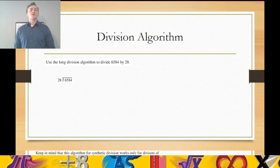It says use the division algorithm to divide 6,584 by 28. In other words, how many times can 28 go into this number 6,584? In other words, how many groupings can we have if we divide 6,584 by 28?